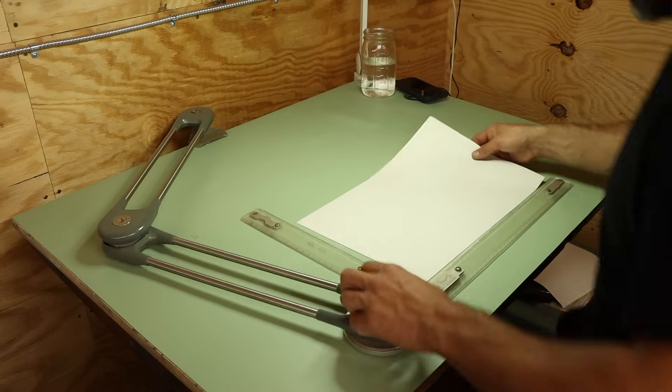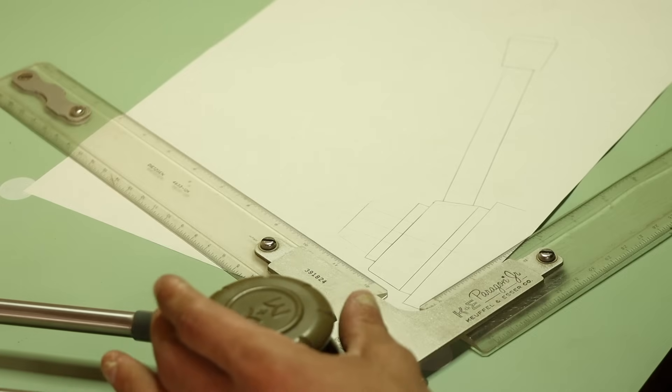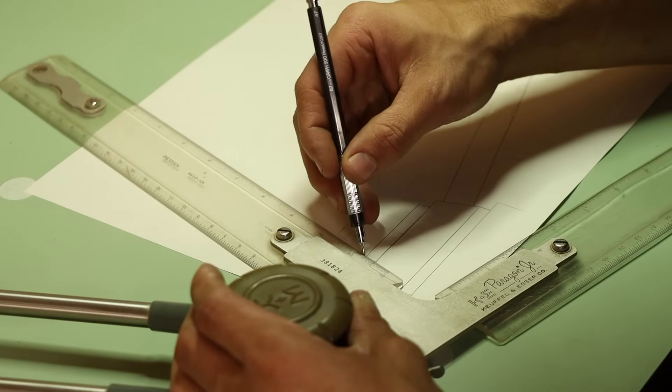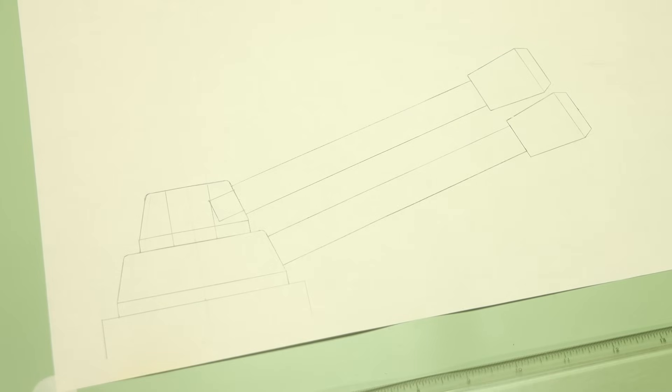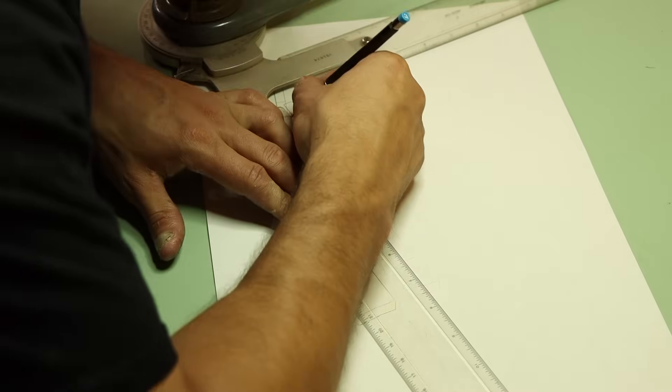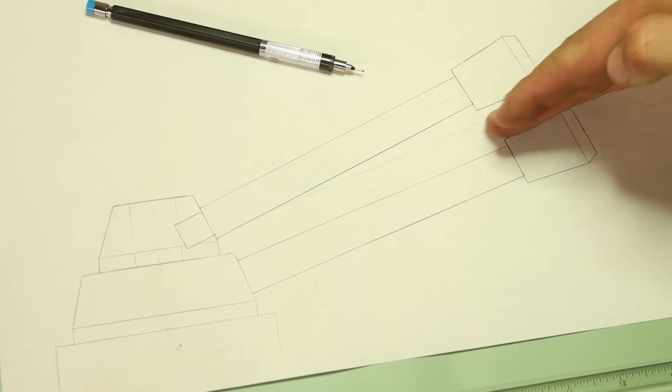While I wait for my supplies to arrive, I'll get a few more measurements and then I can start mocking this up on paper. This will let me make sure that the final result isn't going to look silly or have any interferences. Like here, if I set the new handle at the same angle as the original, I'll end up busting my knuckles whenever I move the levers. That's no bueno. So I'll have to increase the angle of the new lever to give a little more clearance.